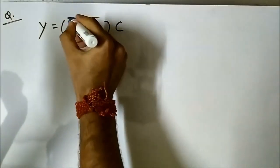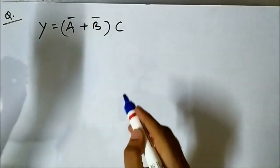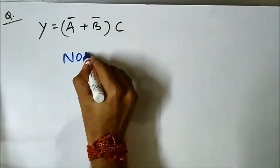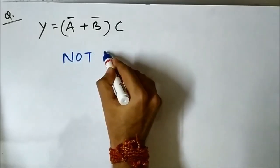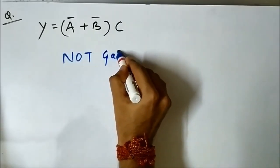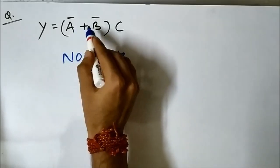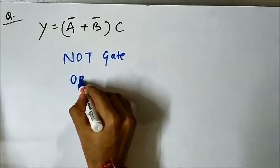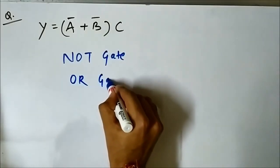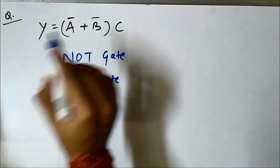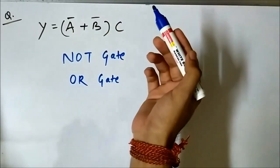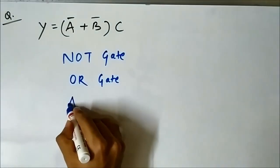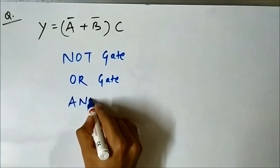Here, the bar on top of A and B represents the NOT gate because an inversion operation is performed — so we require a NOT gate. The plus sign represents OR operation, so we will require an OR gate. The multiplication in the digital domain is the AND operation, so we will require an AND gate.